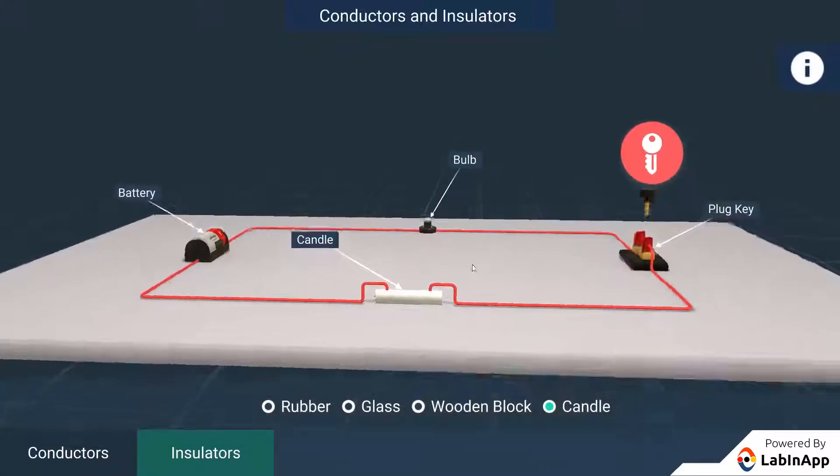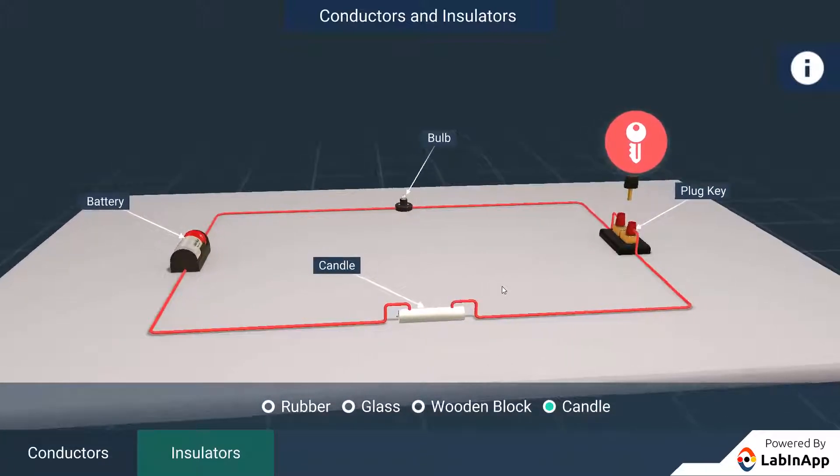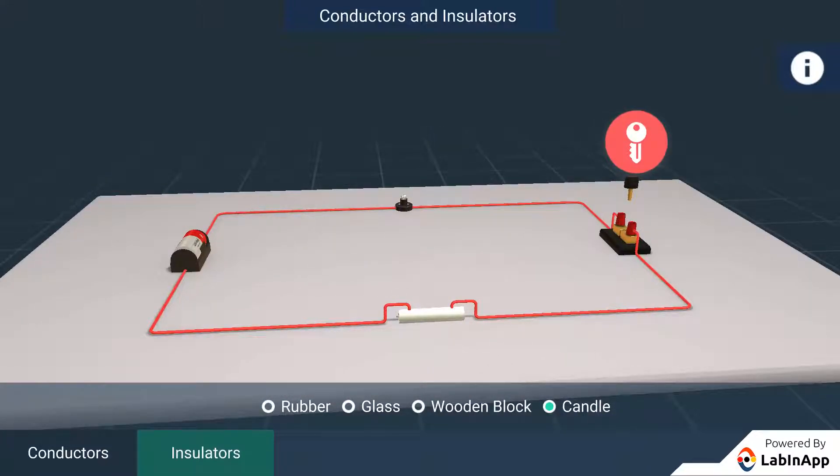Materials which allow electric current to pass through them are conductors of electricity. Insulators do not allow electric current to pass through them.